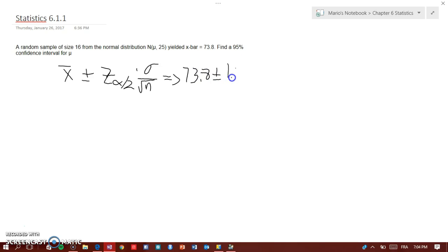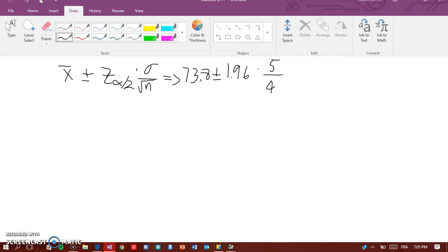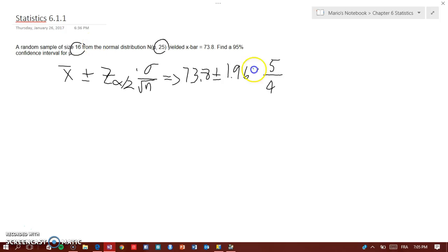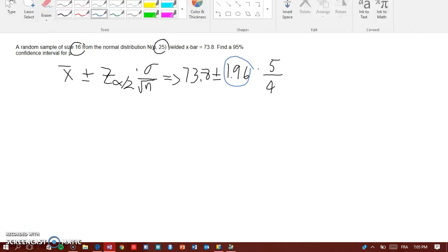σ is going to be 5 because we have 25, and square root of n is going to be 4 because you have 16.